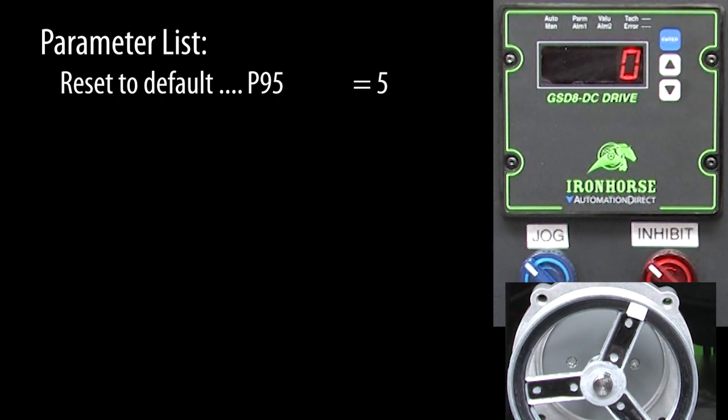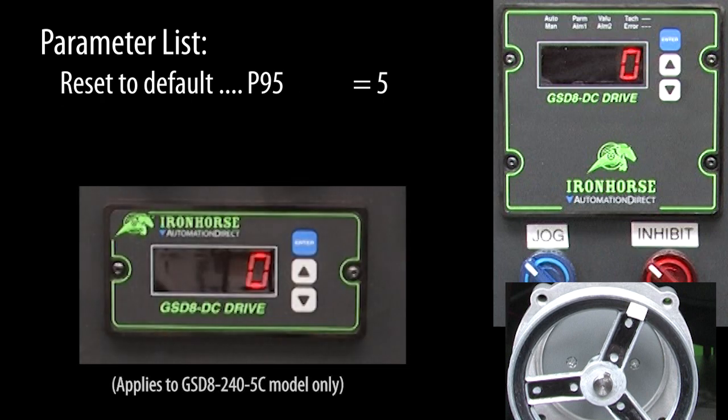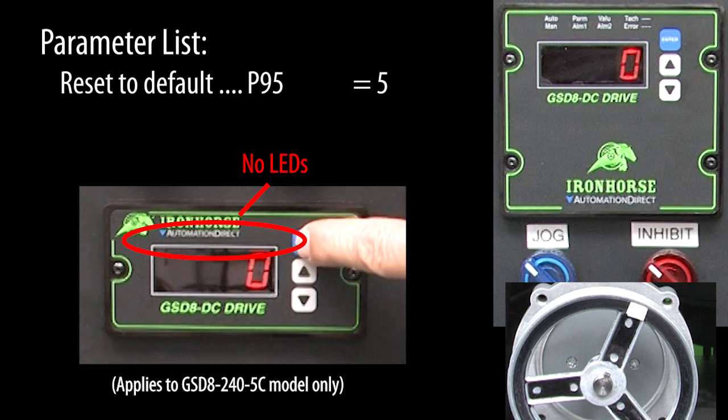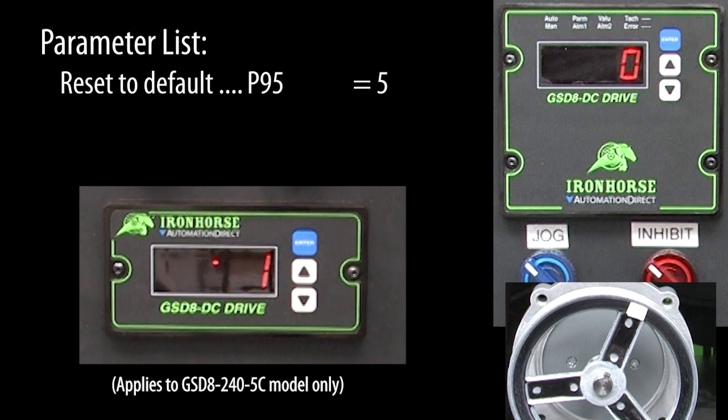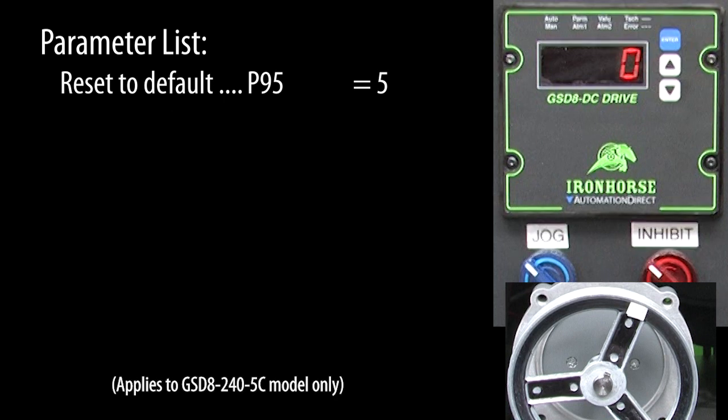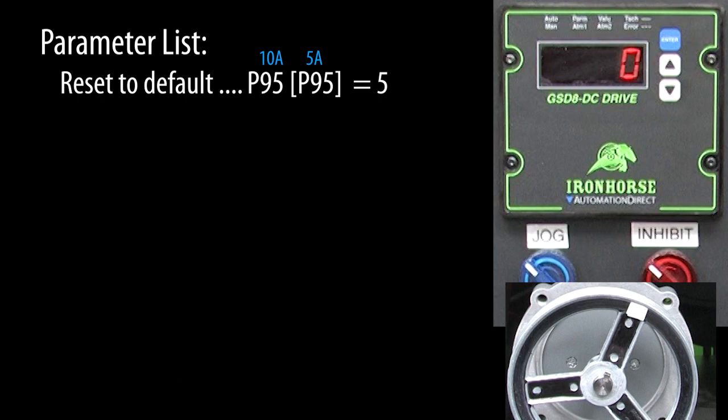By the way, this parameter entry method is exactly the same for the 5 amp drives but they don't have the LEDs to tell you what mode you are in. Instead, you will see a P for parameter entry and blinking dots for value entry. Also beware that the 5 amp model parameter numbers can be different. So don't assume that the parameter numbers I am using on this 10 amp model will be the same for the 5 amp drives. I'll put the 5 amp model parameter numbers in brackets to remind you.